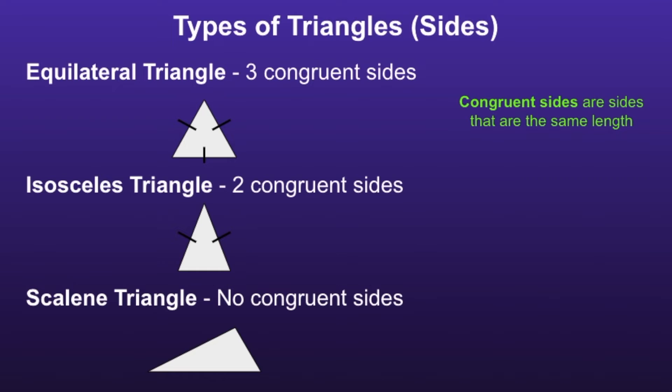A scalene triangle has no congruent sides, so all of the sides are a different length.